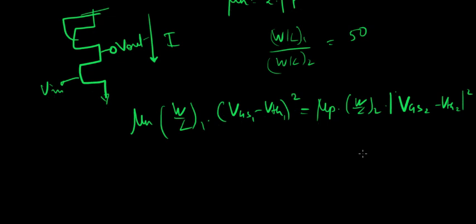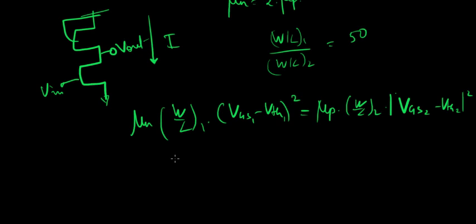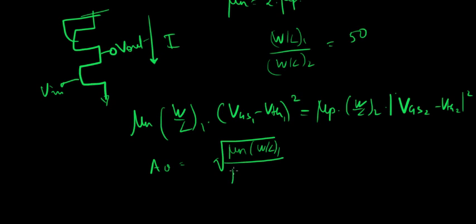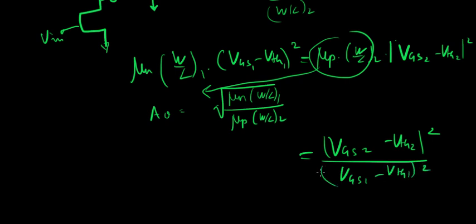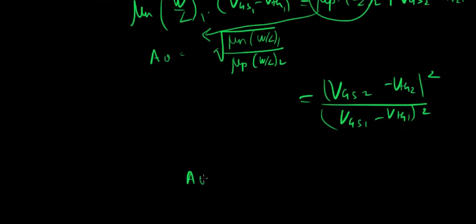So on simplifying this, what do you get? For example, your gain equation is given by root of mu N W over L1 over mu P W over L2. So keep this here and bring this term right here. What do you get? On the right hand side, what you get is VGS2 minus VTH2, the whole squared over VGS1 minus VTH1, the whole squared. And if you take the root, the squares go. So your AV is approximately equal to VGS2 minus VTH2 over VGS1 minus VTH1.